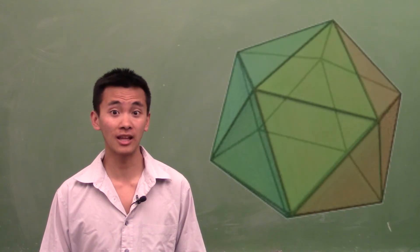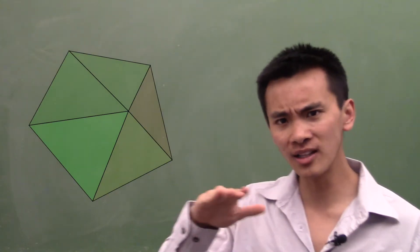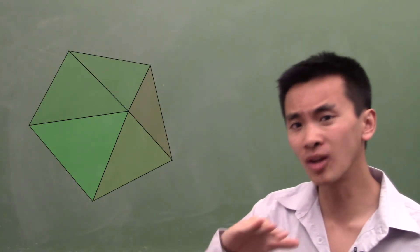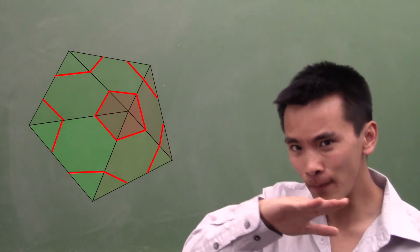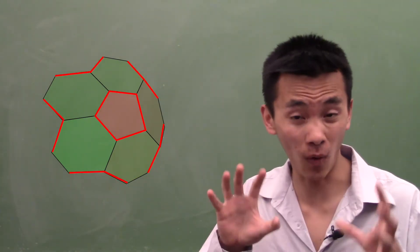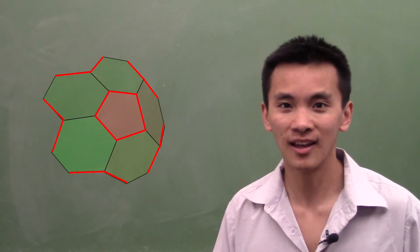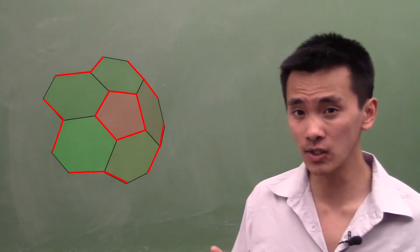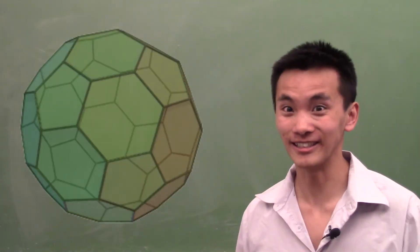So how can we make it rounder? Well, let's just cut the corners. Let's just make the corners flatter. Now what we get once we do that for all corners is a solid that's made of hexagons and pentagons. Yes!